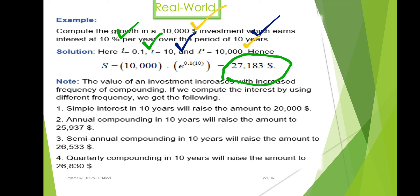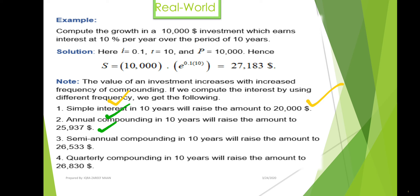The value of investment increases with an increase in the frequency of compounding. Using different frequencies, we get the following results: simple interest over 10 years gives $20,000; annual compounding gives $25,937; semi-annual compounding gives $26,533; quarterly compounding gives $26,830; and continuous compounding gives $27,183. By comparing these values, we can see that the amount increases as the number of compounding periods increases.